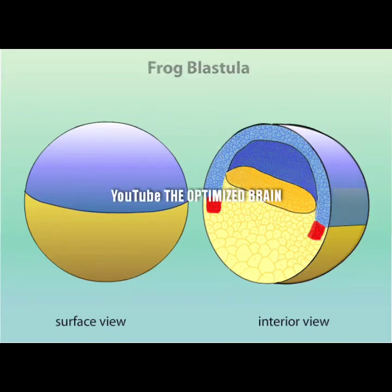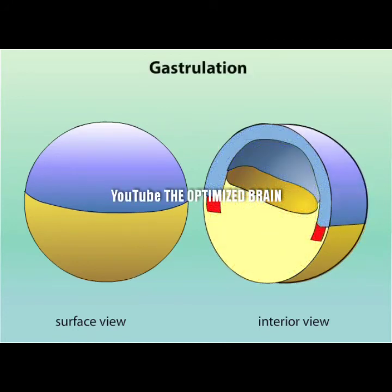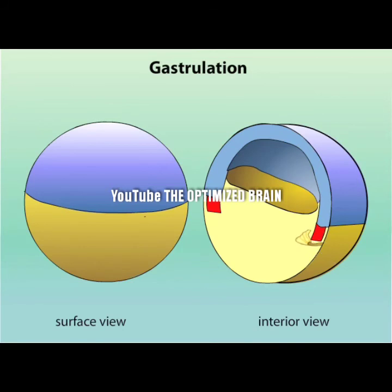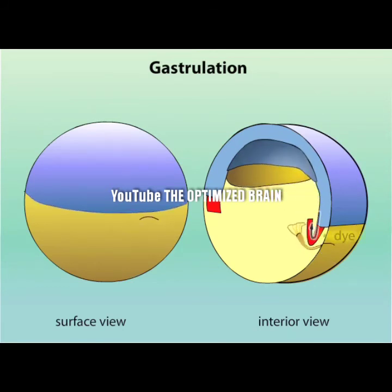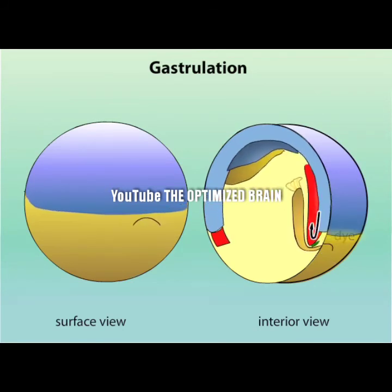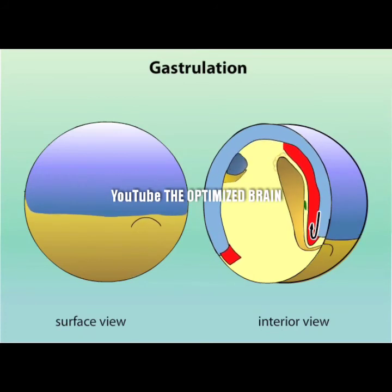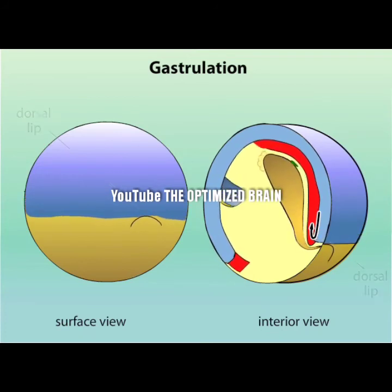At the beginning of gastrulation, a few surface cells, called bottle cells, move into the interior of the embryo, followed by other surface cells. We can track the movement of cells into the embryo if we add dye to a few surface cells. The movement of cells into the embryo creates a lip, called the dorsal lip, over which sheets of cells continue to move inside.